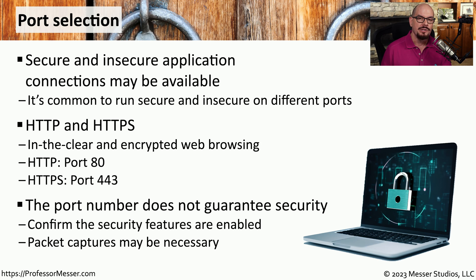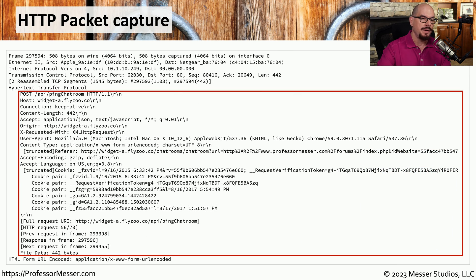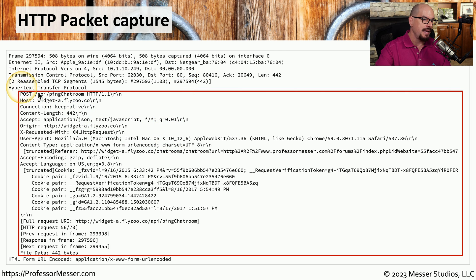You may want to perform a packet capture to confirm that everything being sent across the network is being sent in an encrypted form. For example, you might have captured website traffic where the destination port is port 80, which by default would be HTTP. If we look at the packet capture itself, we can see that the hypertext transfer protocol is all in the clear and easily readable in the packet capture.